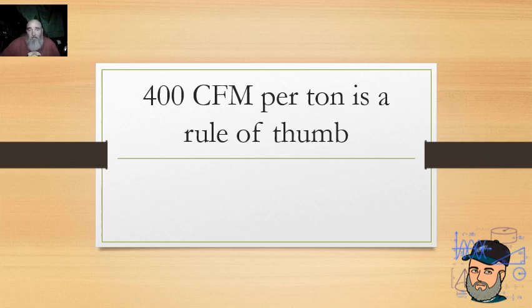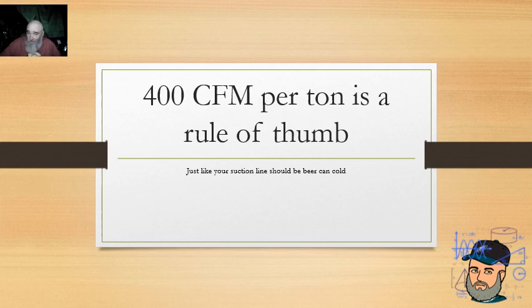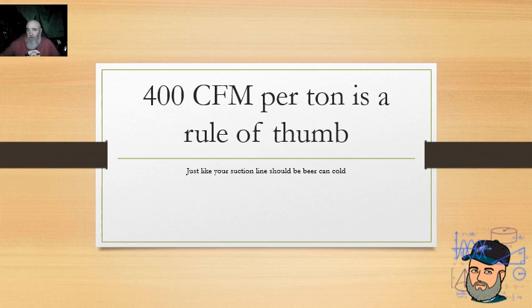400 CFM per ton is a rule of thumb, period. No matter how you slice it, it is a rule of thumb. It's just like a suction line is supposed to be beer can cold — that's a rule of thumb. A lot of people will puff their chest and brag about the cool tools they have to measure superheat and subcooling, they're real precise with their charge, but then the next thing that comes out of their mouth is 400 CFM per ton. 400 CFM per ton is the equivalent of beer can cold.